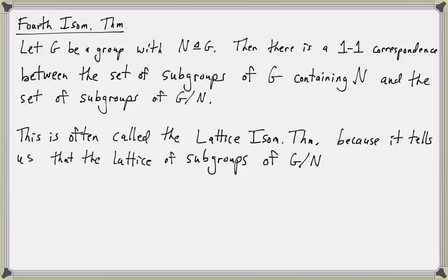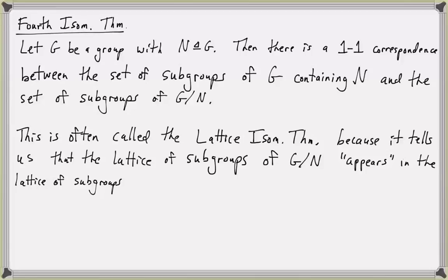More precisely, the isomorphic copy of the lattice of subgroups of G mod N actually appears in the lattice of subgroups of G, above N.